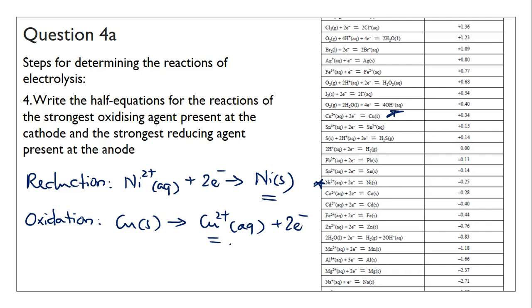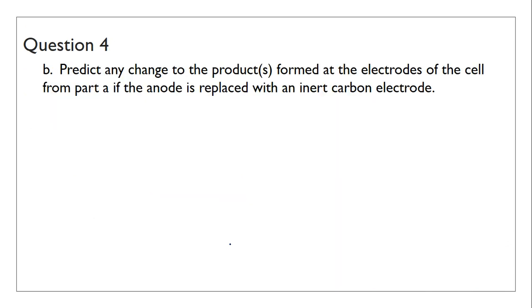Very similar to the previous case when you have inert electrodes. The only exception here is that you have to remember to consider the electrodes as well. Let's look at part B. Predict any change in the products formed at the electrodes of the cell from part A if the anode is replaced with an inert carbon electrode.